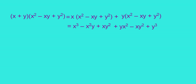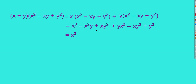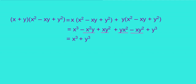Now you can find some like terms. Here minus x squared y and plus yx squared are like terms, so minus x squared y plus x squared y becomes 0. Similarly, xy squared and minus xy squared also become 0. The remaining terms are x cubed plus y cubed. So x plus y into x squared minus xy plus y squared equals x cubed plus y cubed.